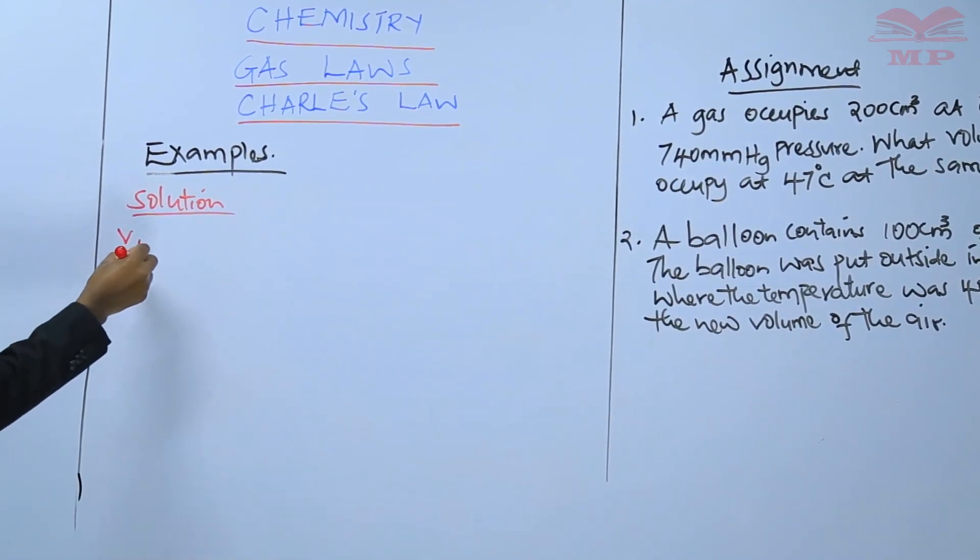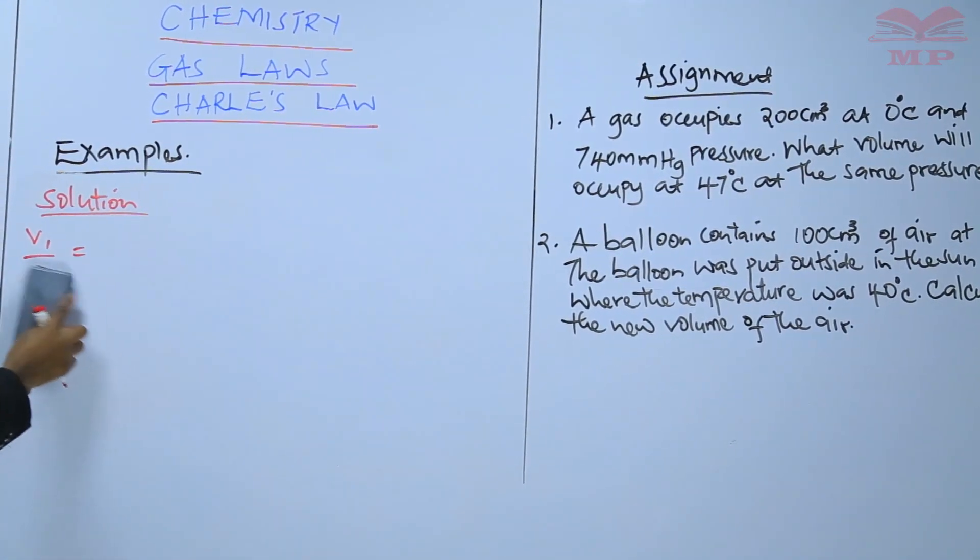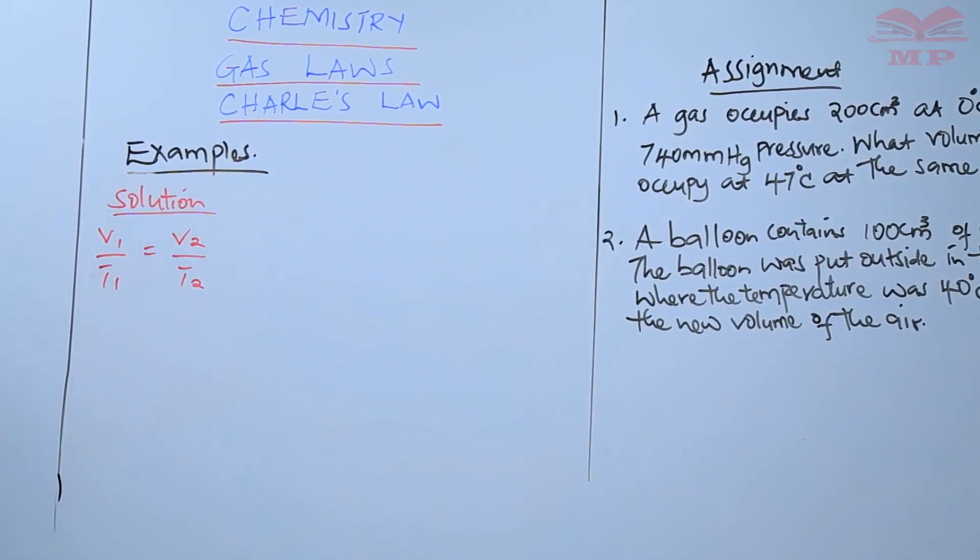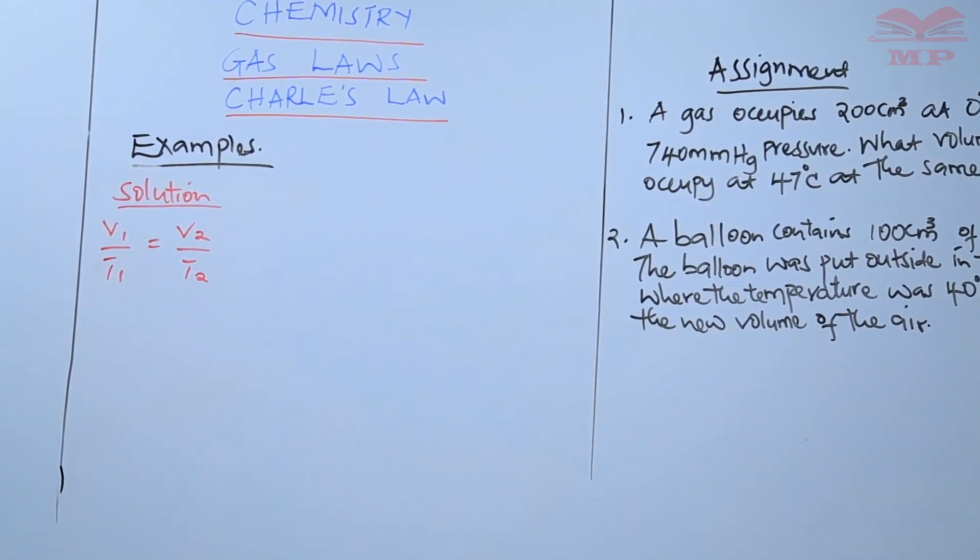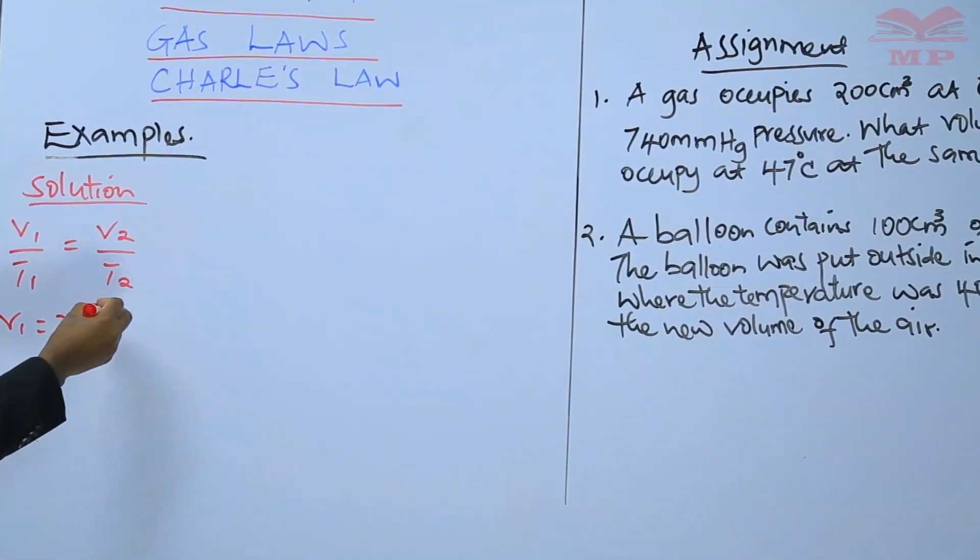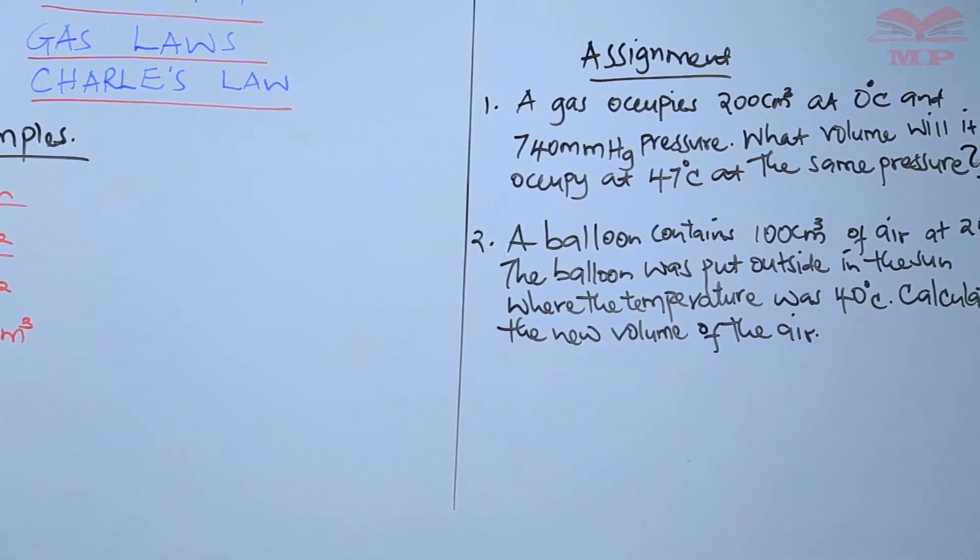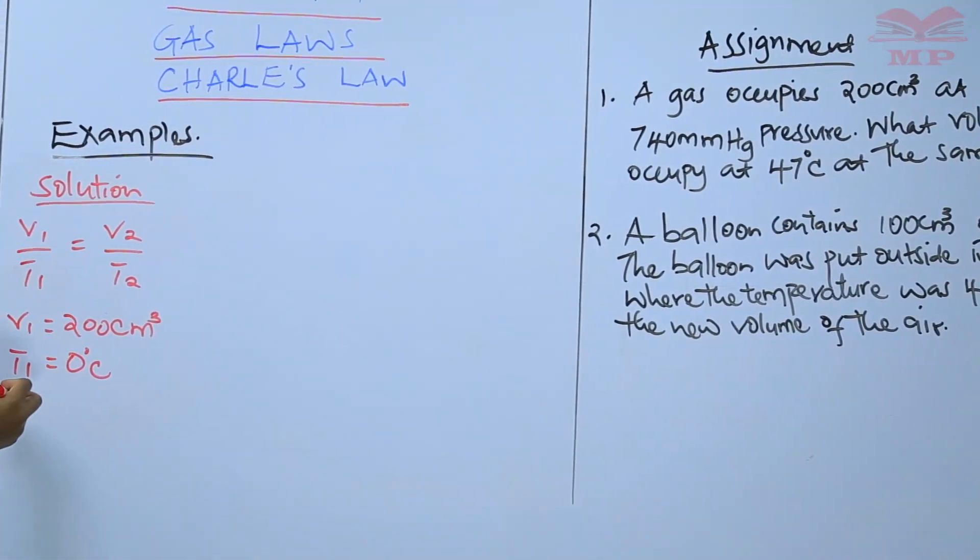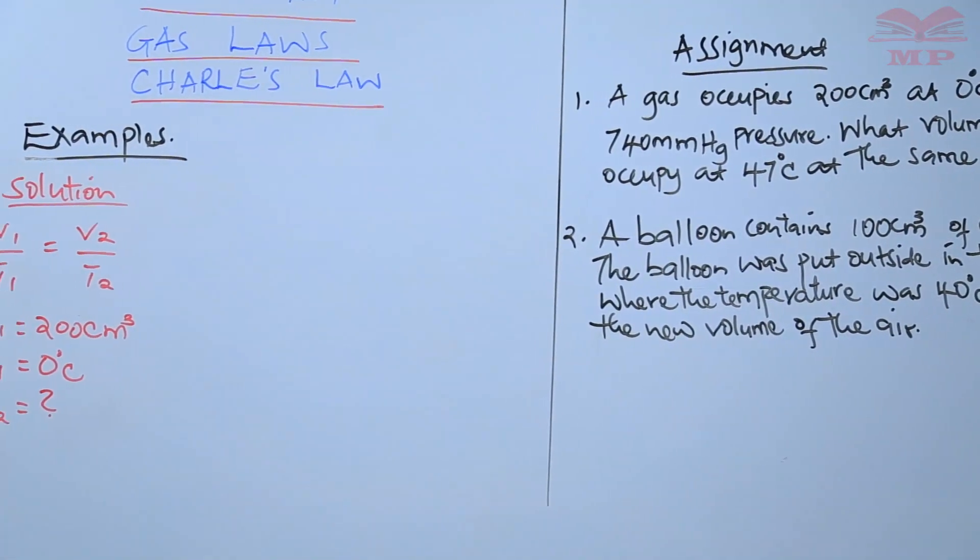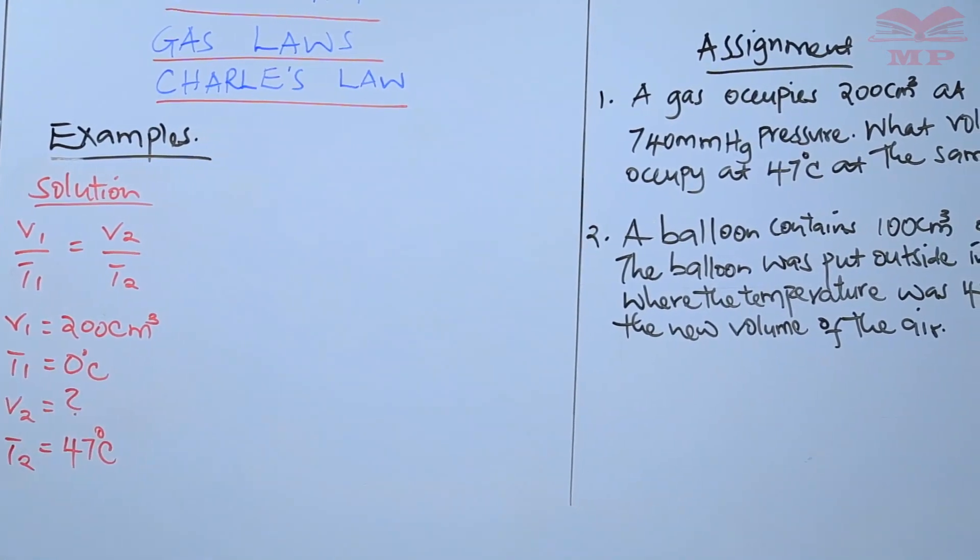The solution to this, the formula, remember it's V1 divided by T1 which is equals to V2 divided by T2. So from our question, V1 is equals to 200 cubic centimeters. T1 is zero degrees Celsius. V2, we don't have V2 and that is what we are looking for. Then T2 is 47, 47 degrees Celsius.